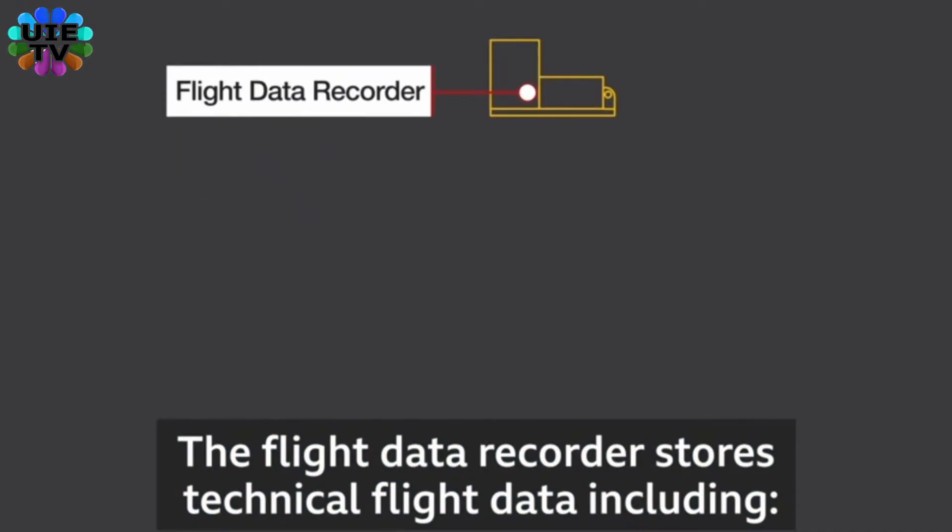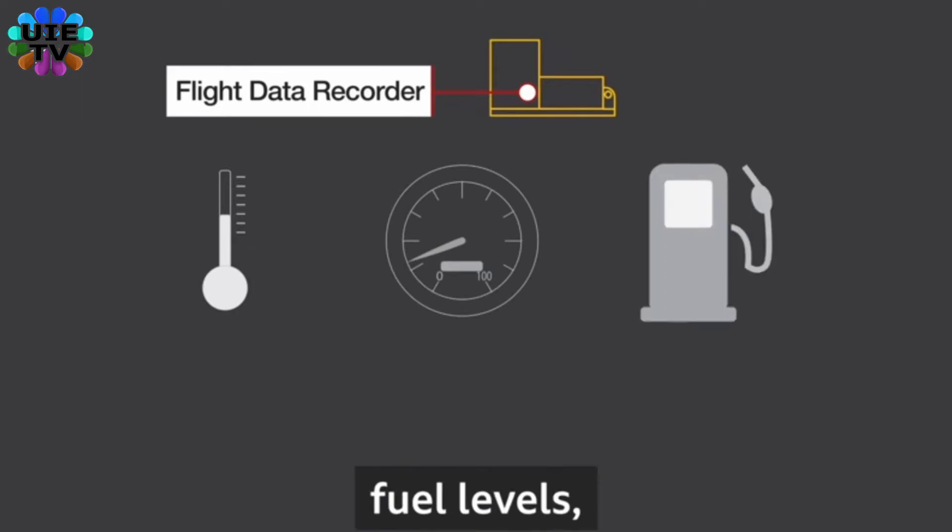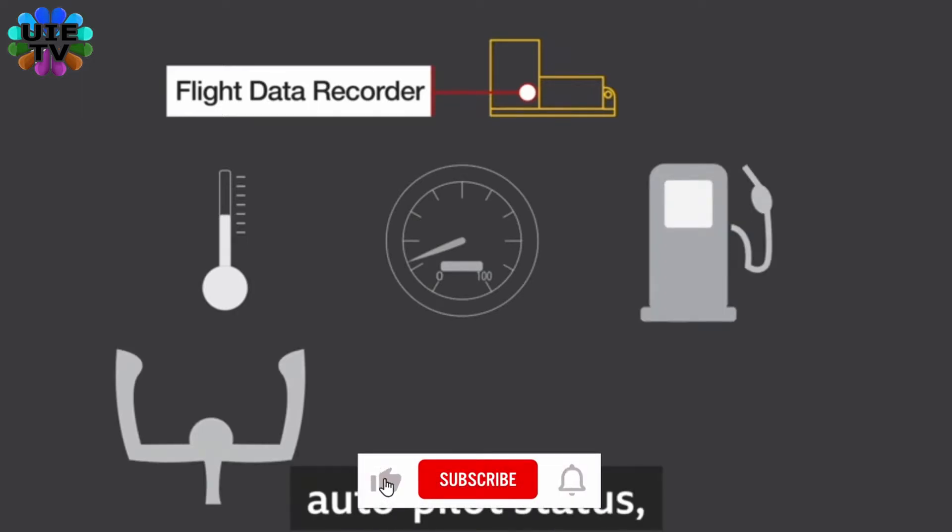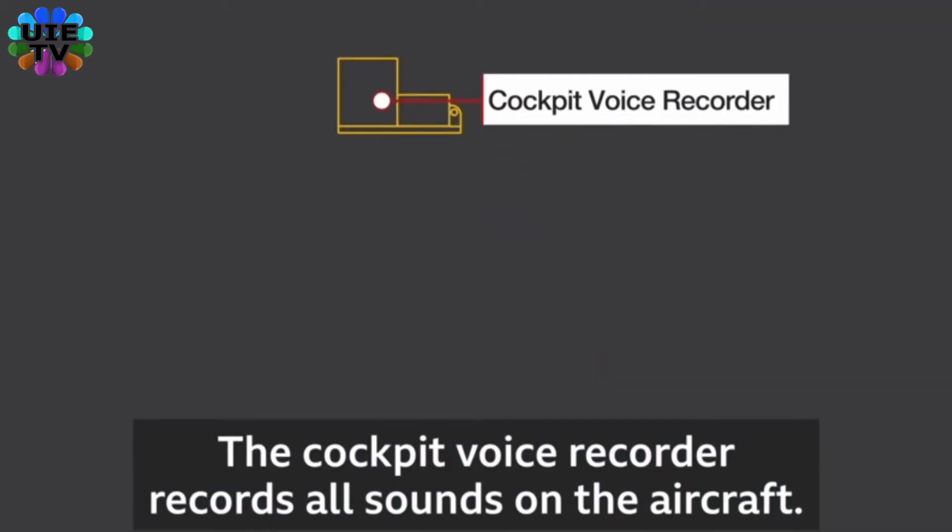The flight data recorder stores technical flight data including temperature, speed, fuel level, autopilot status, altitude, and trajectory. It has 25 hours of recording time.